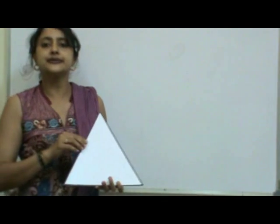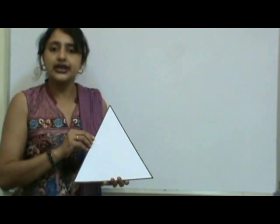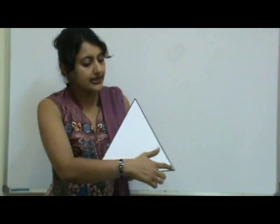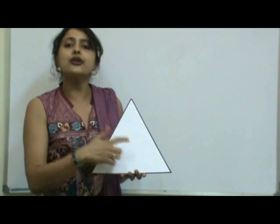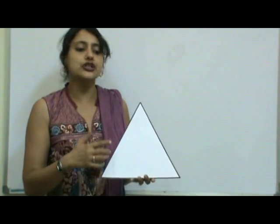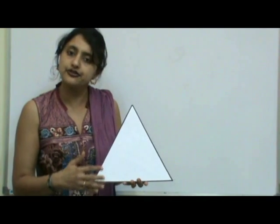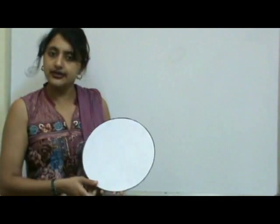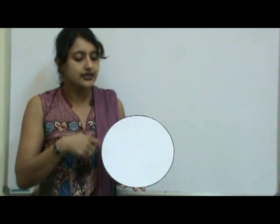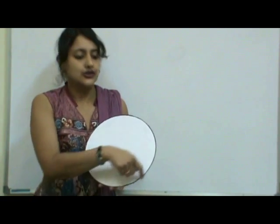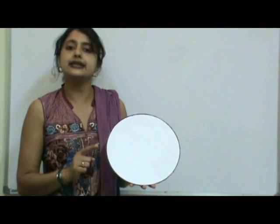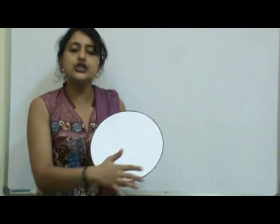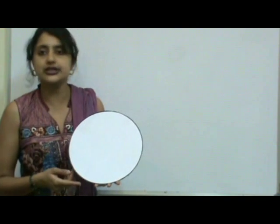Next is a triangle. It has three sides and three vertices. The sides may be equal or may not be equal, depending on the type of triangle. Next is a circle — it has just one curved side, and we cannot see any sharp corners, so it has no vertices.